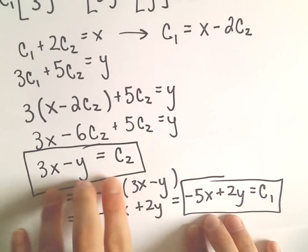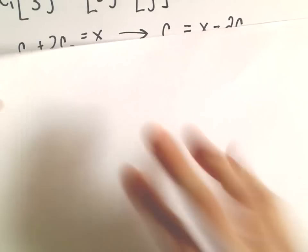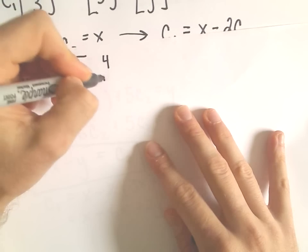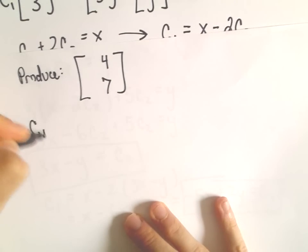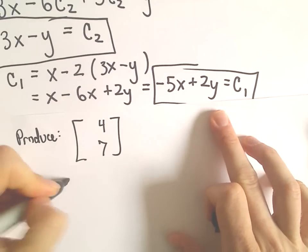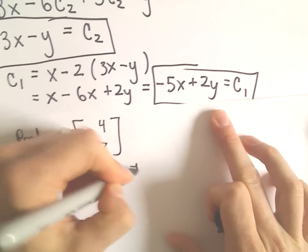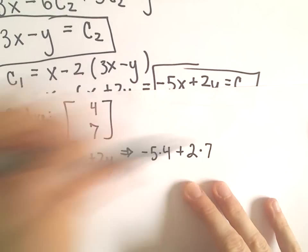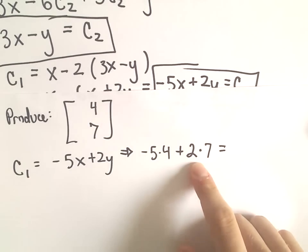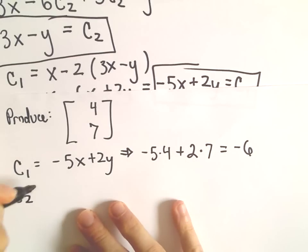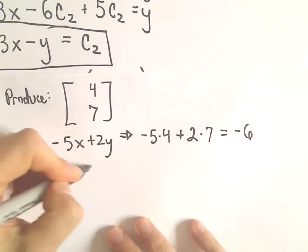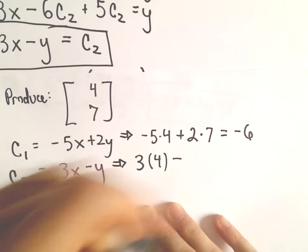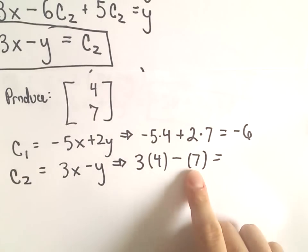With these formulas, given any vector with components x and y, we can determine the scalars C1 and C2. For example, let's produce the vector [4, 7]. C1 equals negative 5 times 4 plus 2 times 7, which is negative 20 plus 14, giving negative 6. C2 equals 3 times 4 minus 7, which is 12 minus 7, giving positive 5.